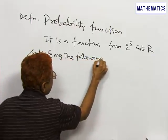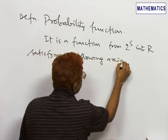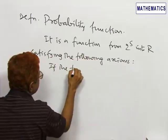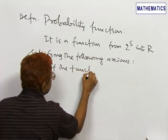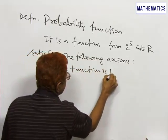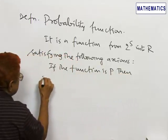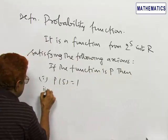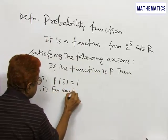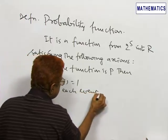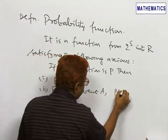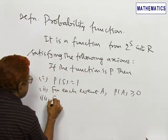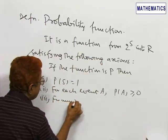the following axioms: If the function is P, then number one, P(S) = 1. Number two, for each event A, P(A) ≥ 0. Number three, for any two events